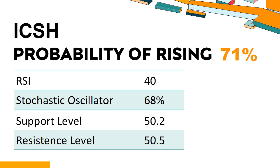What technical signals should you watch for when analyzing ICSH? Technical Signals and Analysis: ICSH's 14-Day Relative Strength Index (RSI) value is 40. When the RSI is above 25 and below 50, it generally indicates that the stock is moderately bearish, meaning the security's price has been falling but has not yet reached oversold levels. The current stochastic oscillator of ICSH is 68%. When the stochastic oscillator stays between 50 and 80, it may indicate a mild downtrend with some selling pressure.